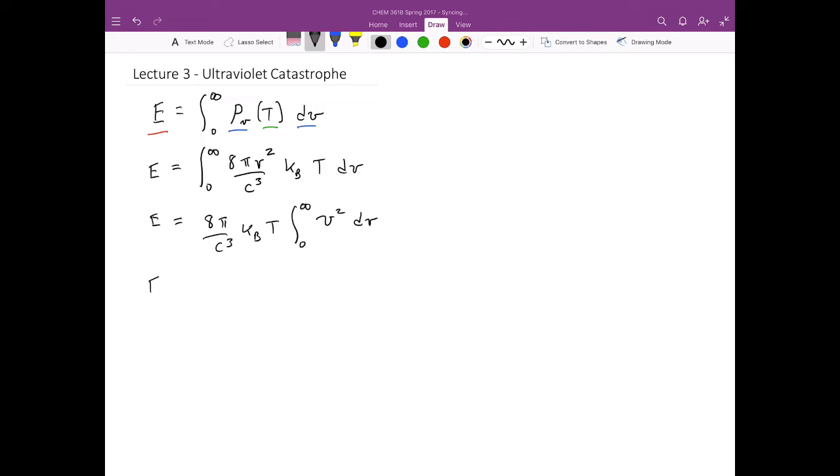And using the inverse power law, then I'm going to have still E equals 8 pi C cubed, times the Boltzmann's constant k_b, times T. And so the inverse power law tells me that I'm going to have nu cubed divided by 3, evaluated between zero and infinity. And so if I evaluate this part of the integral, I use the fundamental theorem of calculus, E equals 8 pi C cubed k_b T. Well here I'm going to have, I'm going to pull that 3 out. And so what I'm going to get is infinity cubed minus zero cubed.